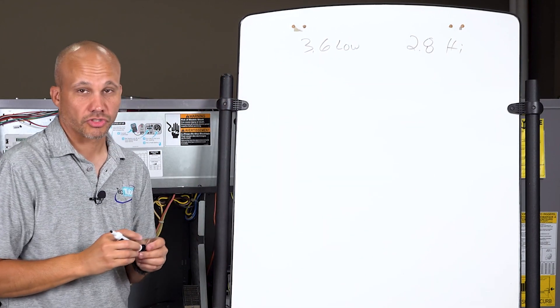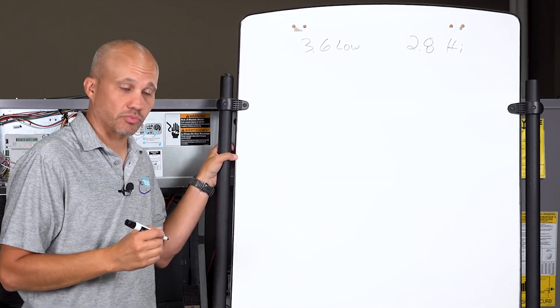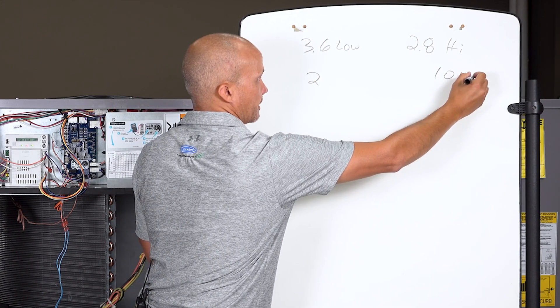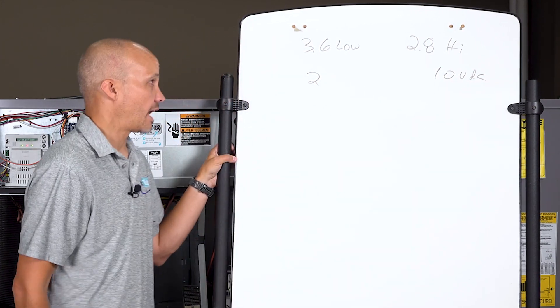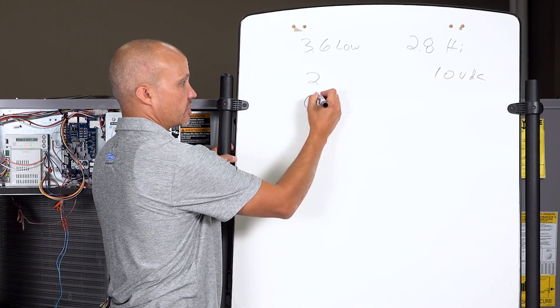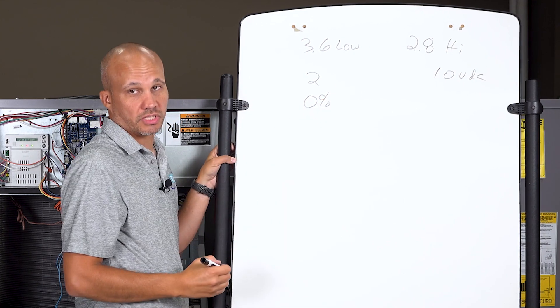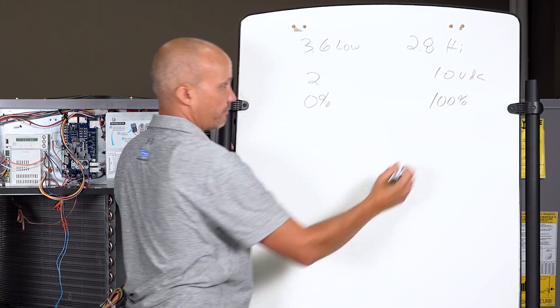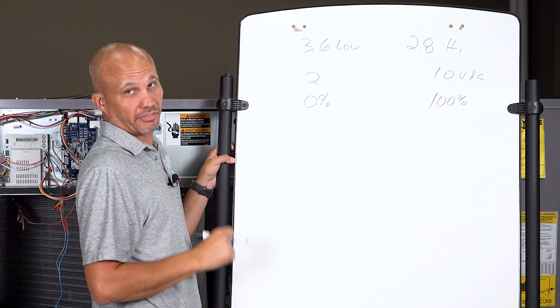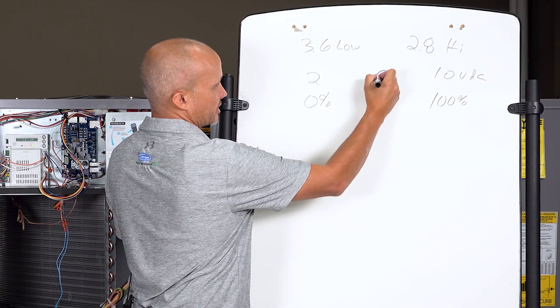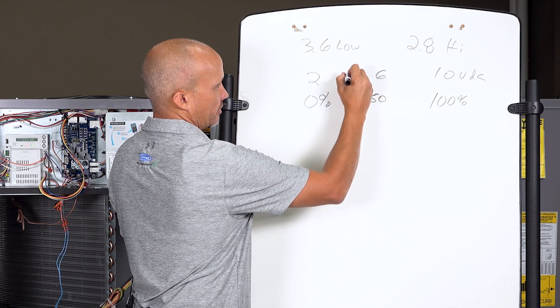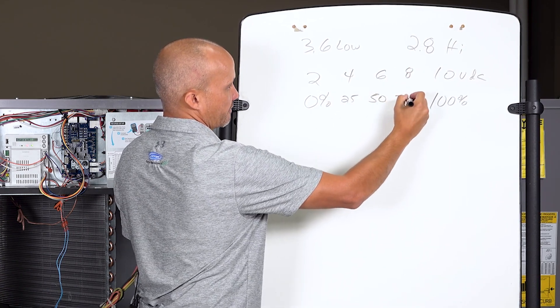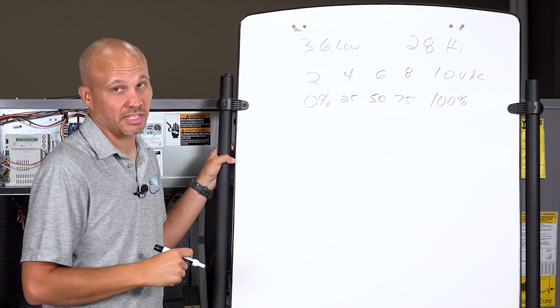For starters, the way this works is these actuators go from 2 to 10 volts DC. That means 2 volts means zero percent - close the damper. 10 volts means 100% - open the damper wide open. The middle of the range is not 5, it's 6. That's 50 percent. 4 volts would be 25 percent, 8 volts would be 75 percent.